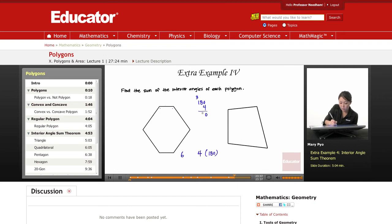So four times 180, this is 720. Okay, so that means the sum of all the angles inside here are going to be 720 degrees.